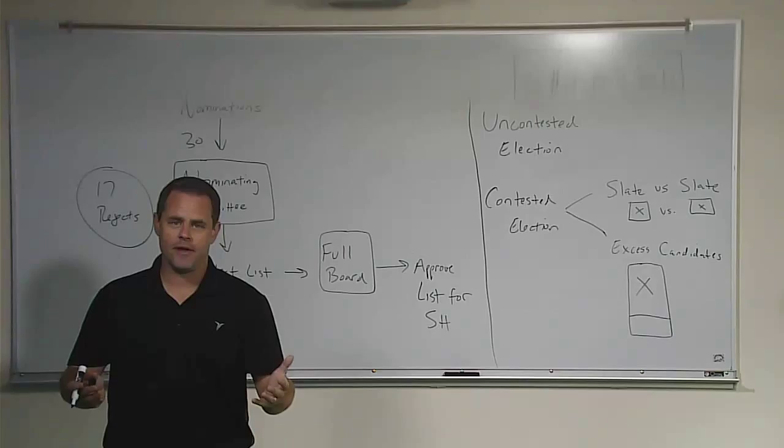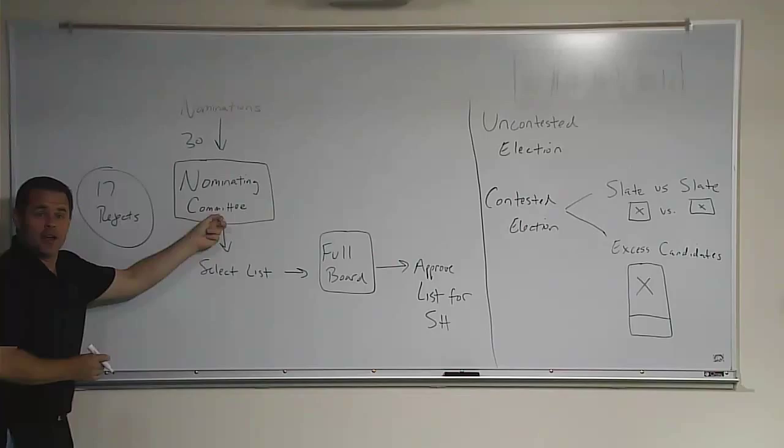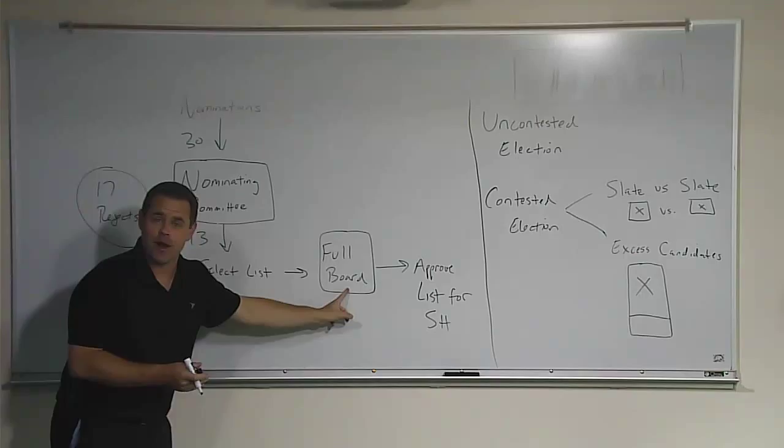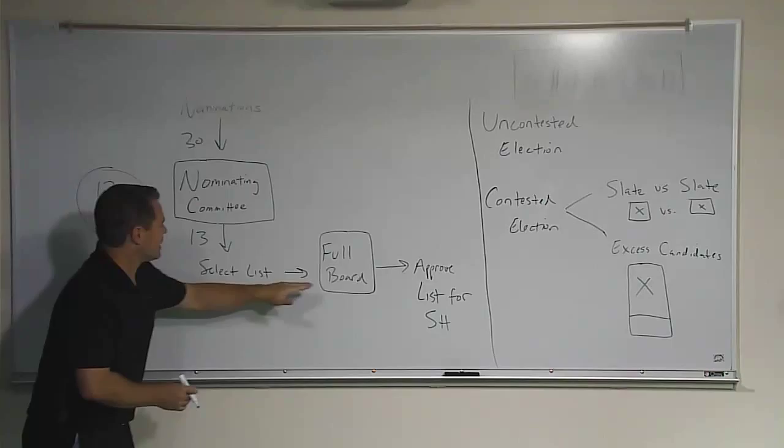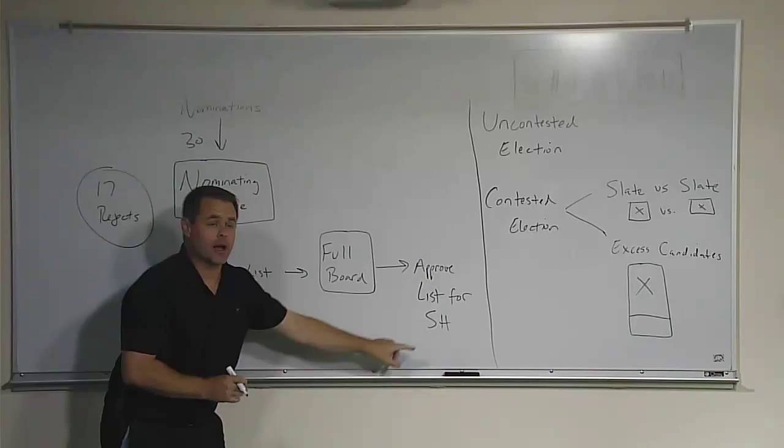The full board votes, it's usually a majority vote, so they normally rubber stamp this. They normally rubber stamp it because part of the board were the ones who nominated them, and the board, having limited time, having bounded rationality, having bounded time, don't necessarily have all the time in the world to fight the nominating committee, nor do they want to. So these are going to be rubber stamped usually, they select the list, the full board approves the list for the shareholder vote.